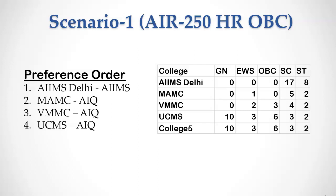There are no seats in general, EWS, and OBC category in AIIMS Delhi. There are no seats in general and OBC category in Maulana Azad Medical College, and there are no general category seats in VMMC. When All India rank 250's allotment turn comes, it checks the first choice — AIIMS Delhi — and finds no general category seats, so it checks OBC seats. There are no vacant OBC seats, so it moves to MAMC, which also has no general and OBC seats. It then moves to the third choice, VMMC, where there are no general seats but 3 OBC seats are available. So it allots an OBC seat to this candidate.